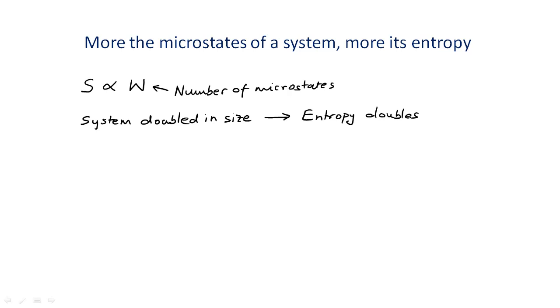But, what about the number of options or microstates? If the number of ways to distribute energy or the number of options in a single unit of material is n, like this, then if we have two units, the number of options to distribute the energy is n times n.